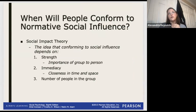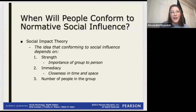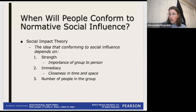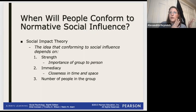Let's look at the factors that come into play for the likelihood of conforming. Social impact theory says there are certain factors that make it more or less likely for social influence to have an effect on you. Number one is strength - how important is that group to you? Are you in a group with strangers or people you love? Immediacy is also important - when something is more immediate, like a crisis situation where you have to think fast, you're going to be more likely to conform.